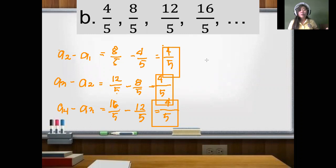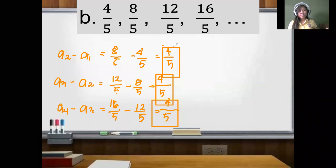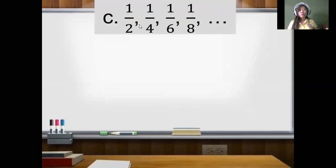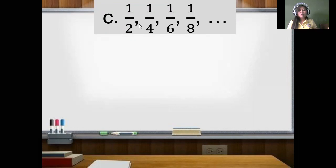Let's proceed to example letter C. We have: 1 half, 1 fourth, 1 sixth, and 1 eighth. Since they don't share a common denominator, we need to find their least common denominator. We'll use A sub 2 minus A sub 1 to find the common difference.